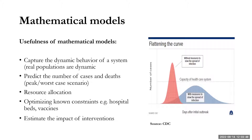With regards to COVID-19, the usefulness of mathematical models was to capture the dynamic behavior of a system. Populations are dynamic in nature and mathematical models are useful to capture this behavior and to predict the number of cases and deaths, the peak of an epidemic, and to define what the worst case scenario would look like, as well as to inform on resource allocation in the event of a pandemic, to optimize known constraints such as hospitalization and vaccines given limited supply in the initial phases, and to estimate the impact of interventions.